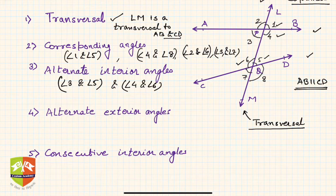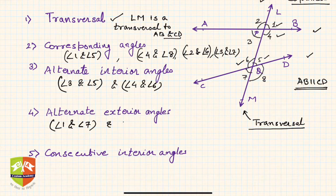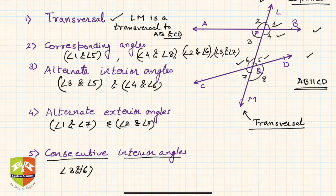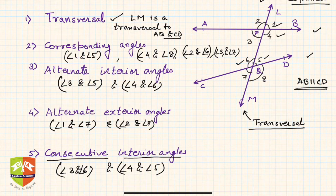Similar to interior angles, we can have alternate exterior angles. Angle 1 and angle 7 are a pair of alternate exterior angles, and angle 2 and angle 8 are also a pair of alternate exterior angles. Consecutive interior angles are again two angles between the two lines but on the same side of the transversal. Angle 3 and angle 6 are consecutive interior angles, and angle 4 and angle 5 are also consecutive interior angles.